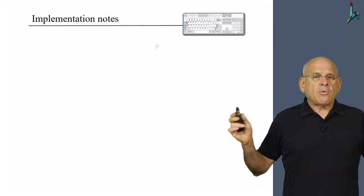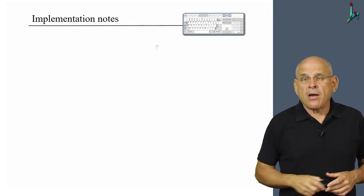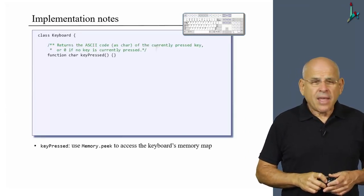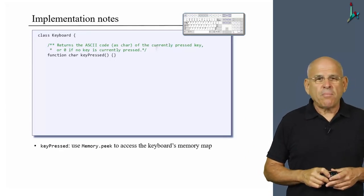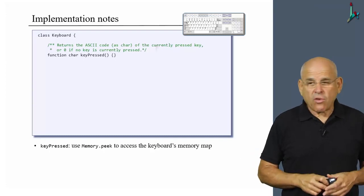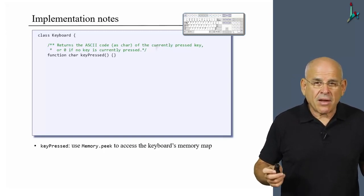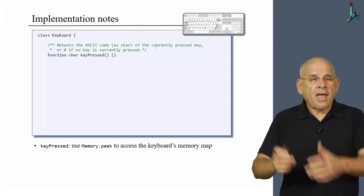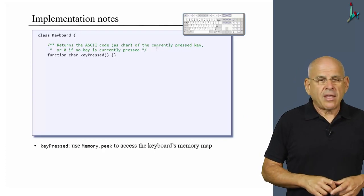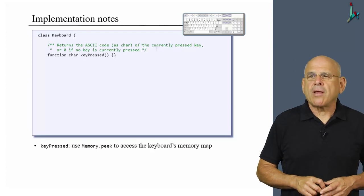So having described the logic of these functions, I'd like to give you some hints on how to implement them on the Hack platform. Beginning with the key pressed. Key pressed can be very easily implemented using memory peak. If you recall, we have a function called peak that allows you to get into any register in the RAM and return its value. Well, one of these registers happened to keep the current contents of the keyboard. So take it from here and I'm sure that you will know how to implement it.